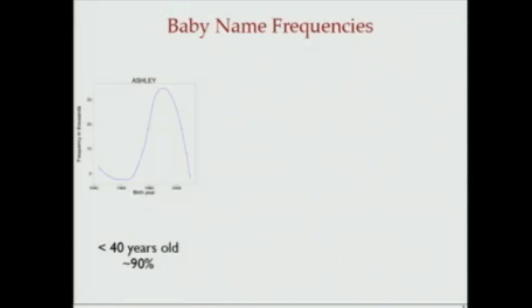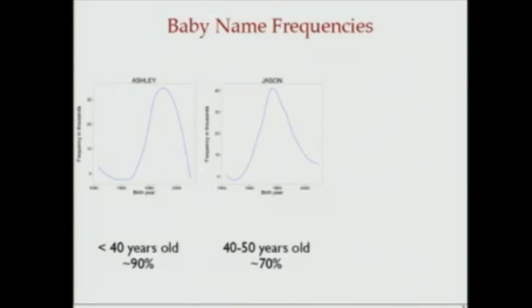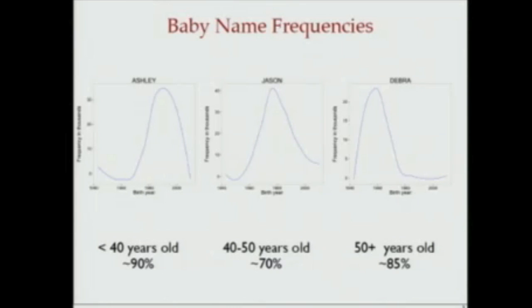The U.S. Social Security Administration releases data about baby names — baby name frequencies for every year — and those baby name frequencies show interesting temporal patterns. For example, if your name is Ashley and you are here today, you are probably less than 40 years old. If your name is Jason, you are probably between 40 to 50 years old. And if your name is Deborah, you are probably more than 50 years old but still interested in data.